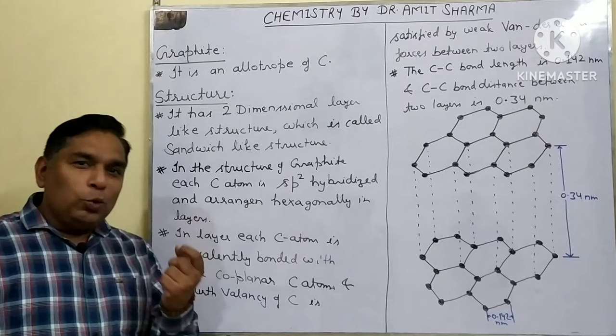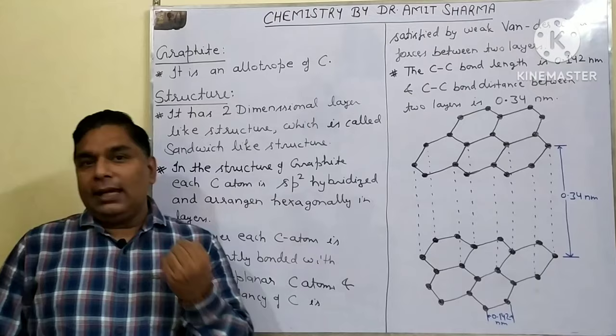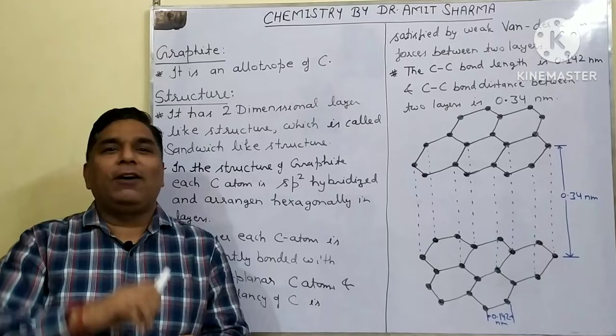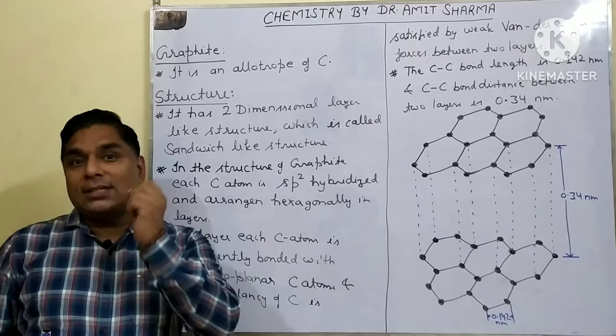Regarding structure, graphite has a two-dimensional layer-like structure, which is also called a sandwich-like structure. There is one two-dimensional layer on top, another below it, and between them there are weak van der Waals forces — which is why it is called a sandwich-like structure.